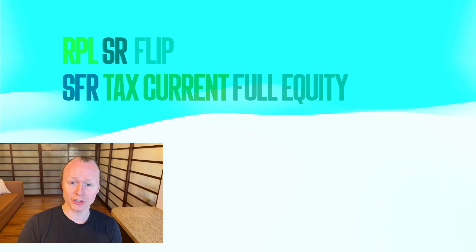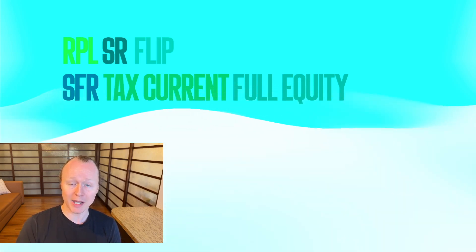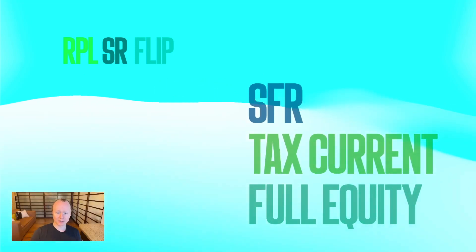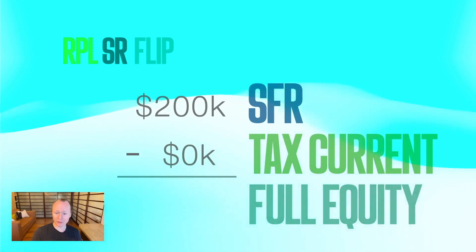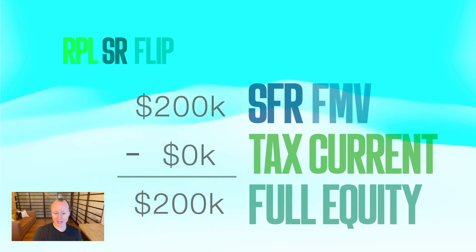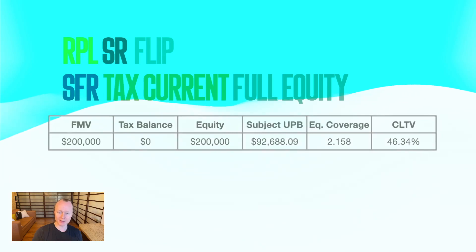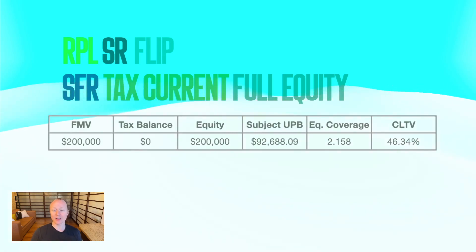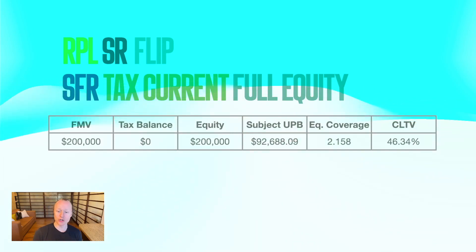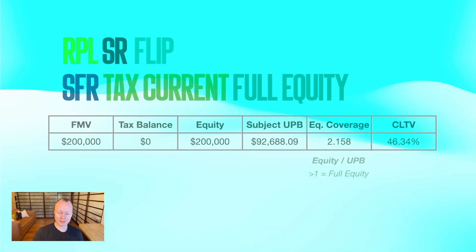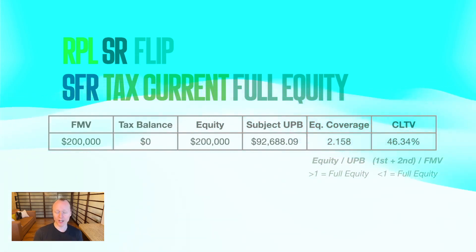A single family residential property was our secured collateral. The taxes are current — the borrower is making sure to pay those property taxes — and that leaves us with a full equity loan. The FMV is $200,000 minus the current taxes, leaving $200,000 of equity. It is full equity because our principal balance, the UPB, is $92,688. That leaves us with an equity coverage of 2.158 — just taking the equity divided by the principal amount. Since it's greater than one, it is a full equity loan. The CLTV is less than one at 46.34%, which also confirms full equity.